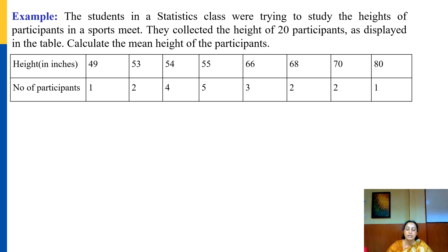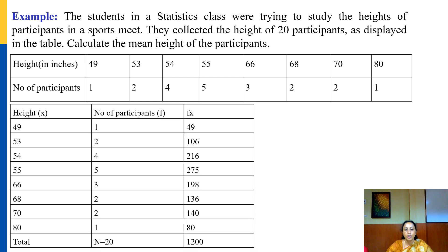Let us take an example. Students in a statistics class studied the heights of participants in a sports meet and collected the heights of 20 participants. We can see the data displayed here — one participant with height 49 inches, two participants with height 53 inches, and so on. We want to find the arithmetic mean height of the participants, so we prepare a table with columns for height (x), frequency (f), and fx.